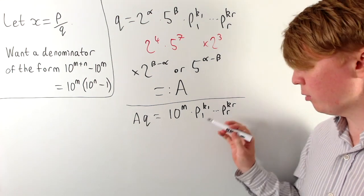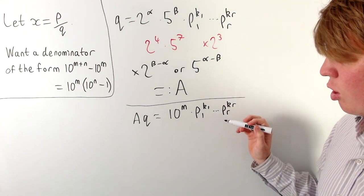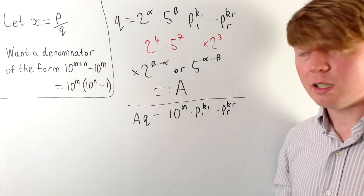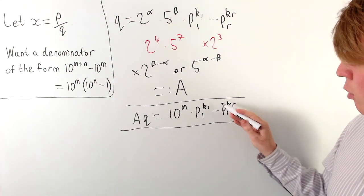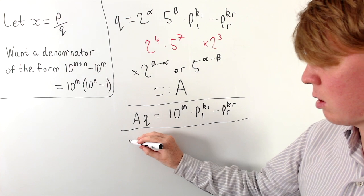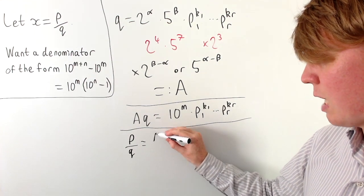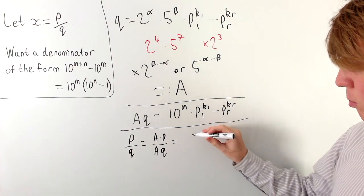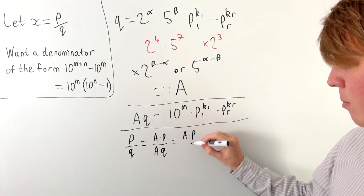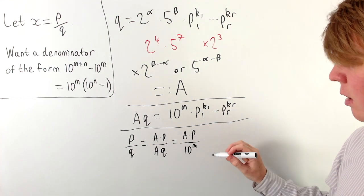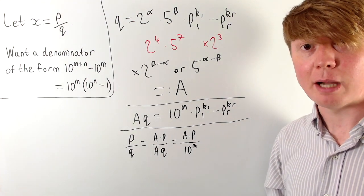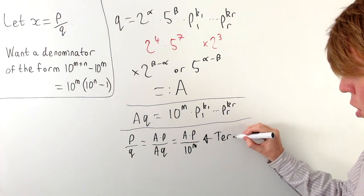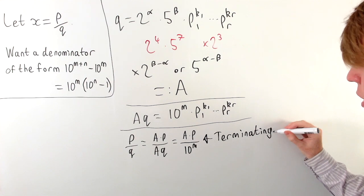We need to be a little careful about the remaining prime factor terms. What if there aren't any prime factors that aren't 2s or 5s? We'll consider this as a separate case. If there aren't any remaining prime factors, we can write our number P over Q as A times P over A times Q, which is now an integer divided by a power of 10. So this is definitely going to give us a terminating decimal, not a recurring one. This is the case where there aren't any prime factors that aren't 2s or 5s.